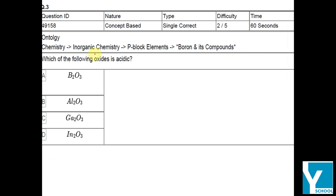The question is: which of the following oxides is acidic? We have B₂O₃, Al₂O₃, Ga₂O₃, and indium oxide. So which is the most acidic?